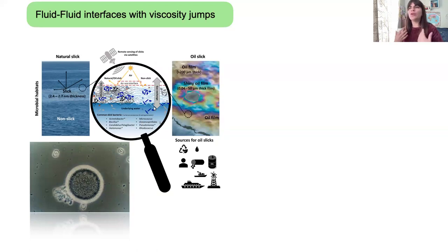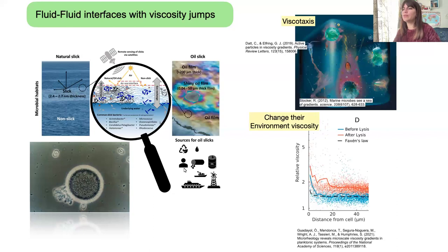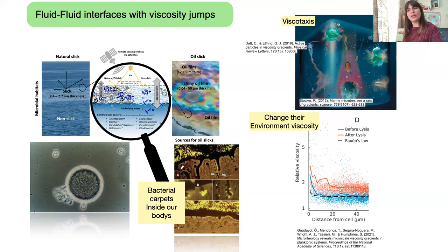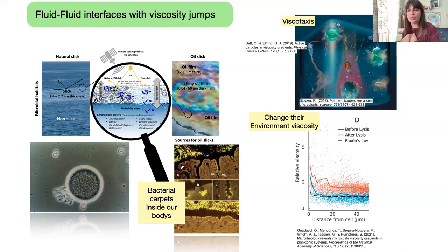We can think of oil slicks which accumulate bacteria inside, or microswimmers doing viscotaxis and then accumulating and changing their environment viscosity — for instance, some microalgae can do that. Or we can think about bacteria accumulated between two fluids of different viscosity inside our body.